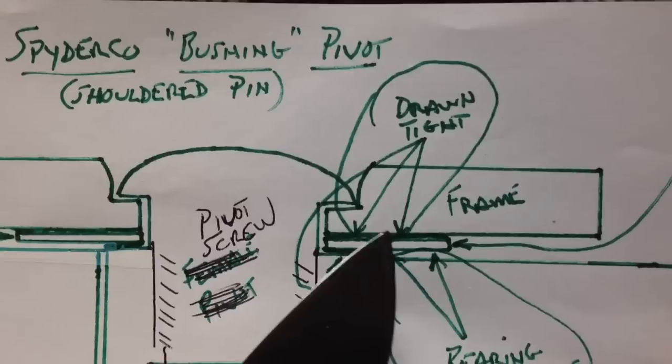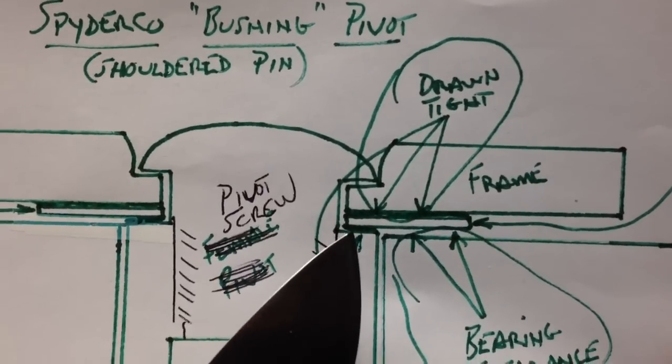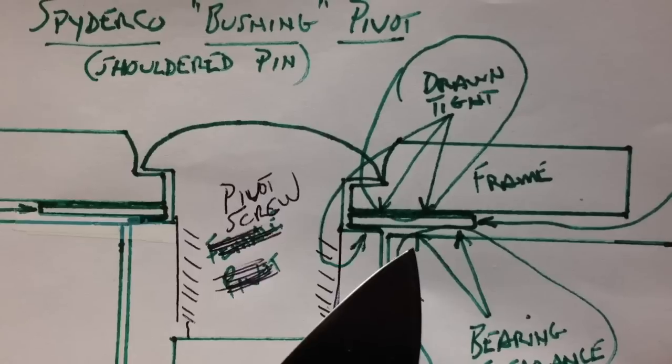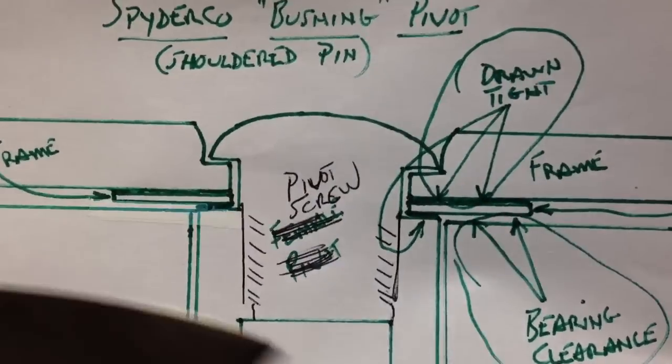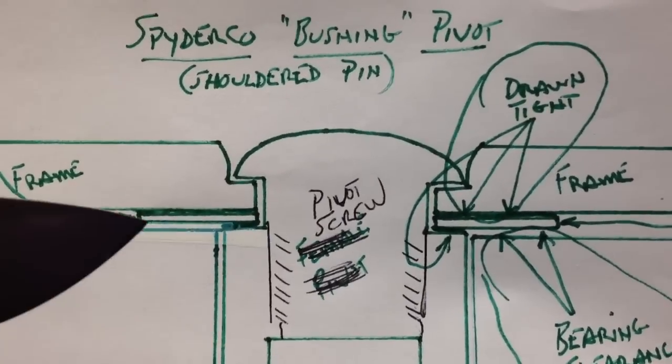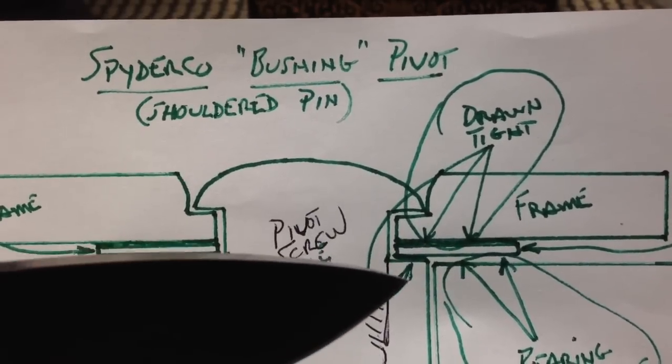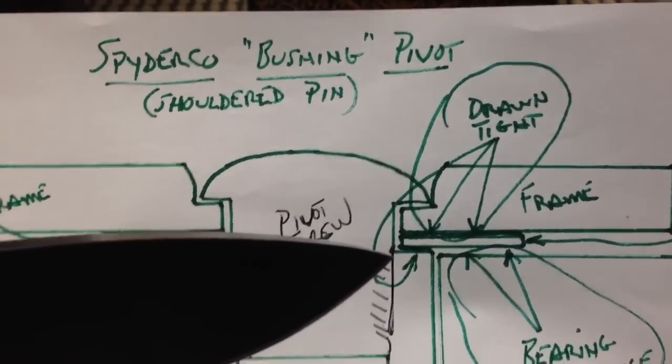We're drawn tight here, we're drawn tight here, we have a little gap here. If you notice the difference is the washers in the Spyderco bushing pivot are trapped between this shouldered pin and the frame.